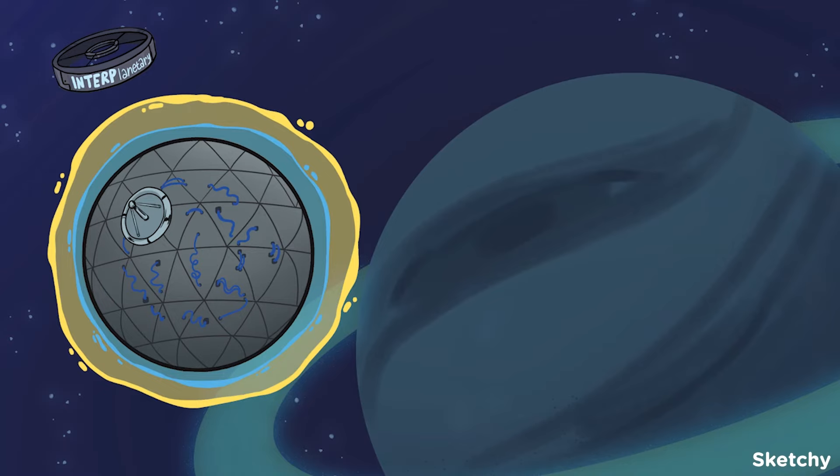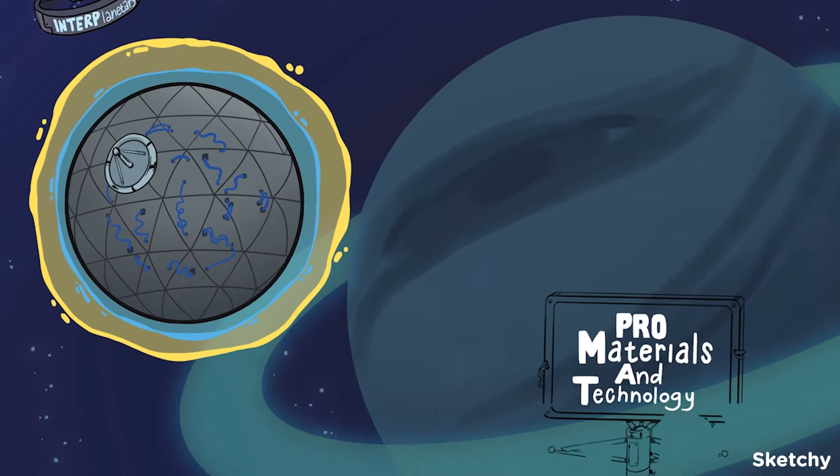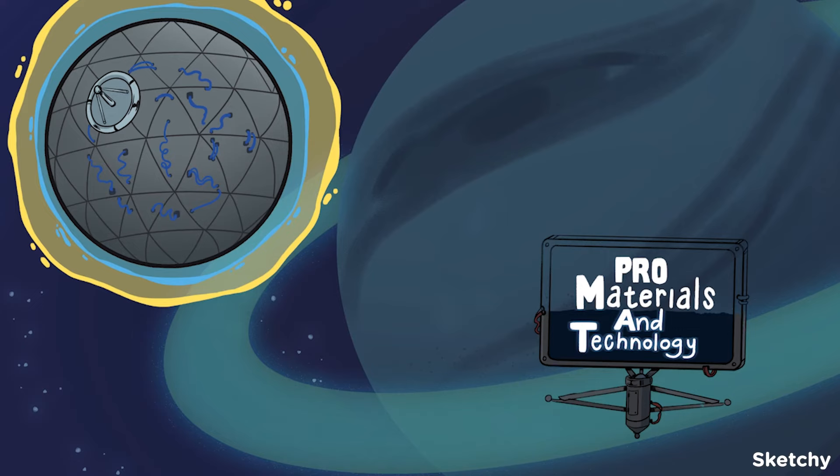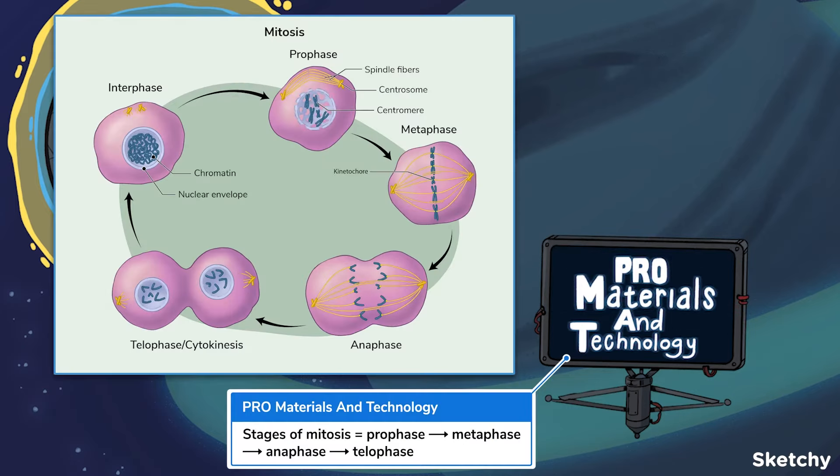So, now we're ready to start mitosis. With that said, here's our builder's fancy floating sign to help you recall the stages of mitosis. Prophase, metaphase, anaphase, and telophase.